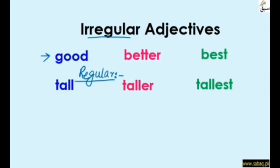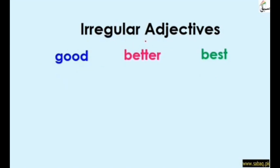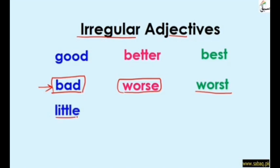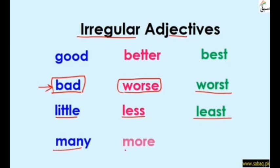Now let's look at another irregular adjective: 'bad.' The comparative of 'bad' is 'worse,' and the superlative is 'worst.' So bad, worse, worst is another irregular adjective. Here are some more examples: 'little,' 'less,' 'least'; and 'many,' 'more,' 'most' — these are also irregular adjectives.